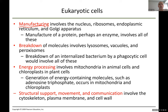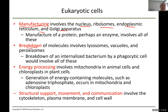For manufacturing, the organelles involved are the nucleus, ribosomes, endoplasmic reticulum, and Golgi apparatus. For breakdown: lysosomes, vacuoles, and peroxisomes. For energy processing: mitochondria and chloroplasts — mitochondria in both animals and plants, chloroplasts only in plants. You will not find chloroplasts in any animal cell.